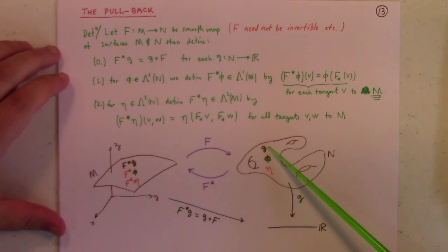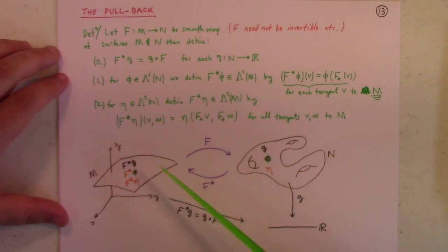But here's the deal. If we're given a zero form, in other words a function, or a one form phi, or a two form eta, we can use this pullback construction to define corresponding zero forms, one forms, and two forms on M. So we can pull back these differential forms to these differential forms.